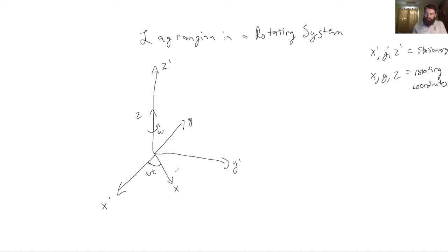I'm writing it this way because in the proof that I'm going to do, I'm going to be solving for things in the rotating coordinate system. And if I labeled them with primes, I would have to write a bunch of primes over and over again, which would get very tedious. So instead, I'm labeling things like this.